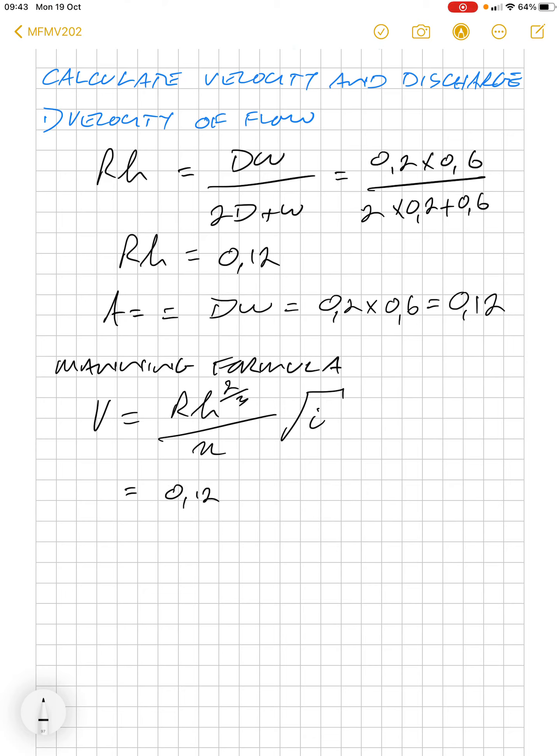We have 0.12, our hydraulic radius, to the power of two-thirds divided by n which is 0.013, and then the square root of 1 over 360, which is the i value. This gives us a velocity of 0.986 meters per second.